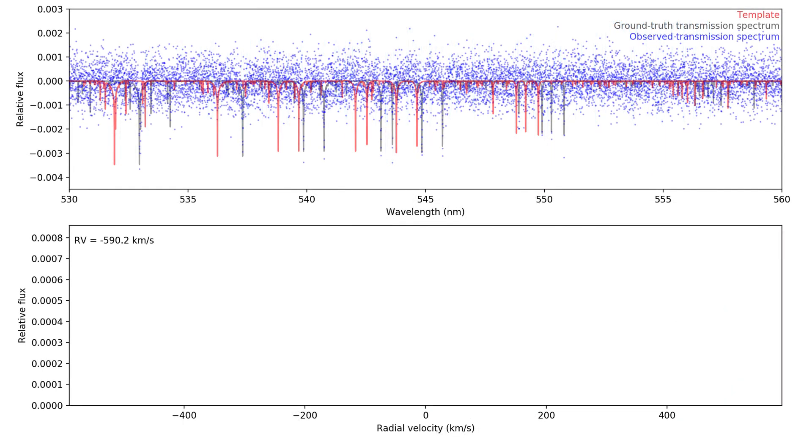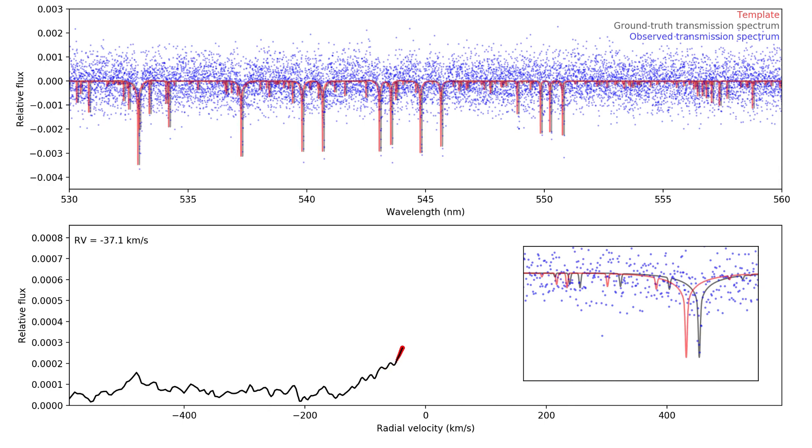In blue is shown a noisy transmission spectrum of a planet atmosphere that contains gaseous iron. The template is a model spectrum of iron, and the cross-correlation function is evaluated for consecutive shifts of this template. The x-axis of the cross-correlation function is therefore radial velocity and the y-axis denotes the average line depth. At the correct radial velocity, when the template is exactly aligned with the planet, meaning that it has the same Doppler shift, the cross-correlation function will maximize.